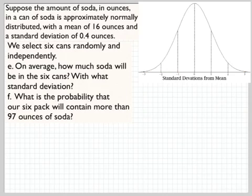Okay, now let's come back to repeating these random variables and adding them up. So, same thing, same can of soda, same mean of 16 ounces, standard deviation 0.4 ounces. But now we're going to select six cans randomly and independently. Basically we're getting a random six pack of soda here.